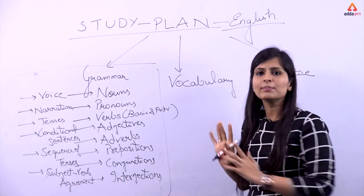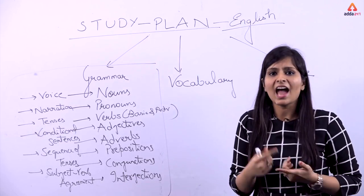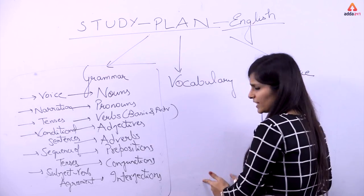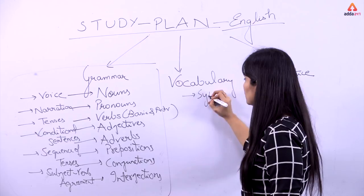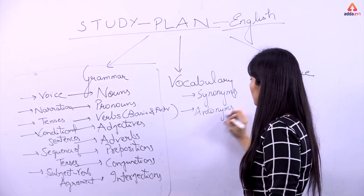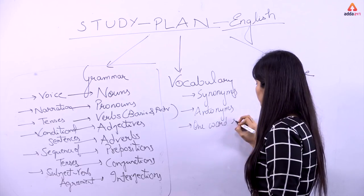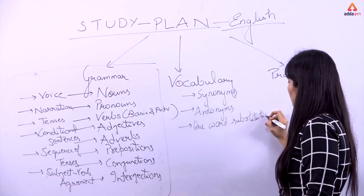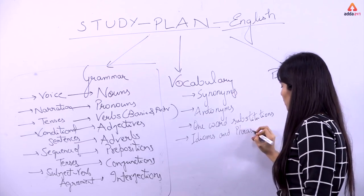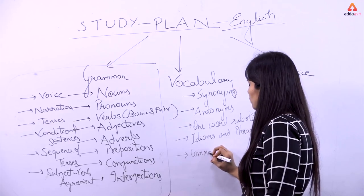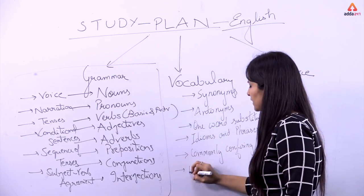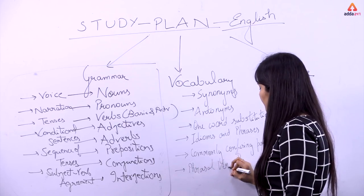Now coming to vocabulary — I think everybody knows what vocabulary is. In vocabulary we have: synonyms, antonyms, one-word substitutions, idioms and phrases, commonly confused words (commonly confusing pairs), and phrasal verbs. These topics are all part of vocabulary.